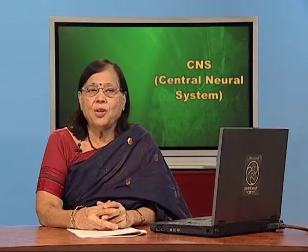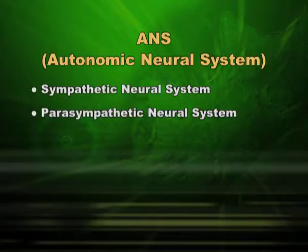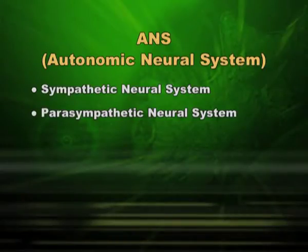The autonomic neural system has two divisions: the sympathetic neural system and the parasympathetic neural system. These two work in coordination. For example, if you close your eyes, the sympathetic neural system is involved, and when you open your eyes, the parasympathetic neural system is involved. For every organ there is one way to initiate the function and one way to return to normal — one system initiates the action and the other closes the action. Both systems are equally important.